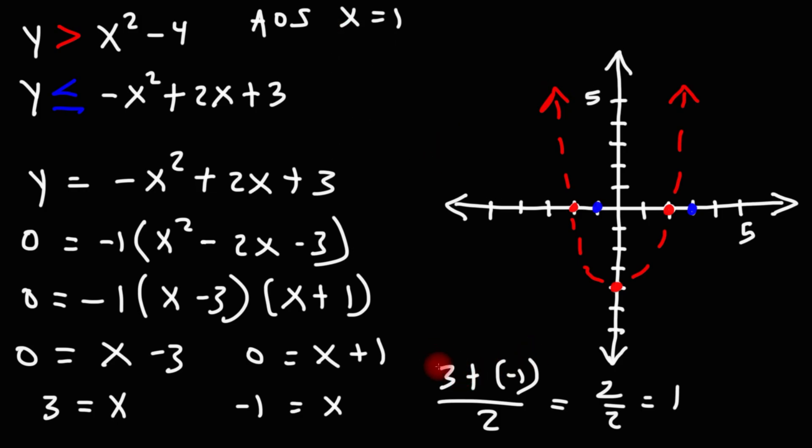The axis of symmetry will give us the x-coordinate of the vertex. For x squared minus 4, we didn't need to do that because the axis of symmetry was going to be at the origin, as we can see here.